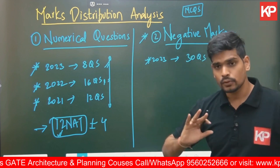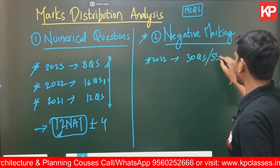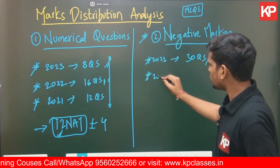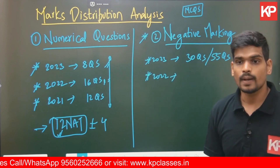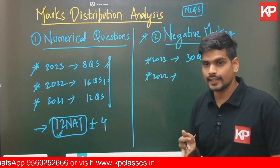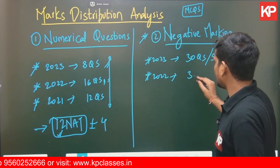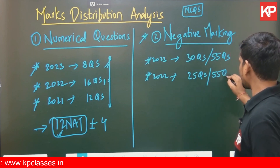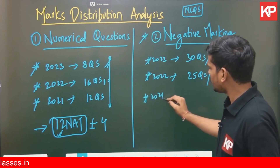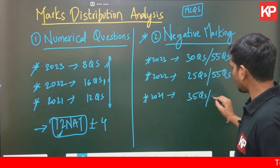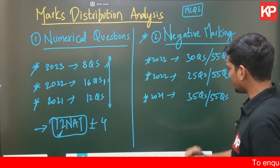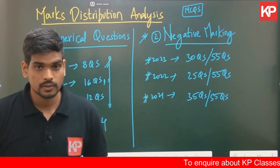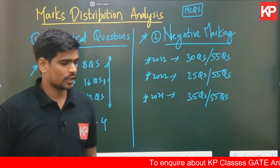The total number of negative-marking-based questions in the 2023 paper were 30 questions out of 55 core questions — plus 10 general aptitude questions which I'm leaving aside. In GATE 2022 the paper had relatively fewer negative marking questions — only 25 out of 55 questions had negative marking. In 2021, 35 out of 55 questions had negative marking. I'm taking data from 2021 onwards because that's when Multiple Select Questions, a new pattern, were introduced; before that only MCQs and numericals were asked.